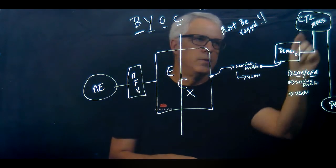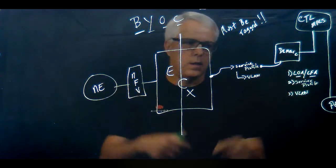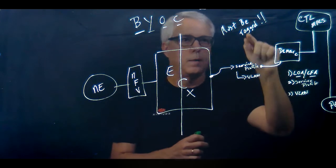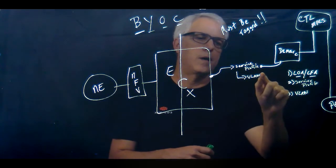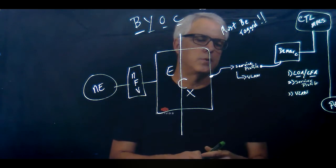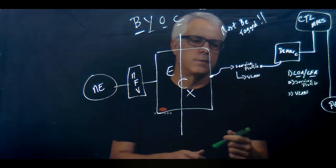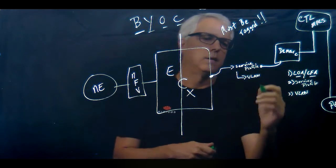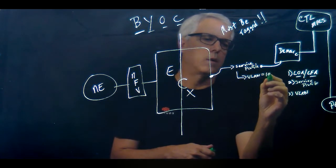To stitch it all together, the customer would go out and talk to CenturyLink—in this case could be any provider, must be tagged—and that provider is going to give them the attributes. They'll say here's a dot one Q circuit and on that dot one Q circuit the VLAN ID we're going to assign in this case is VLAN 100.